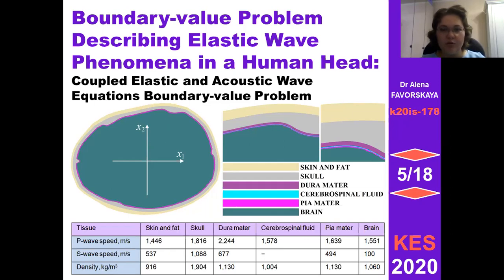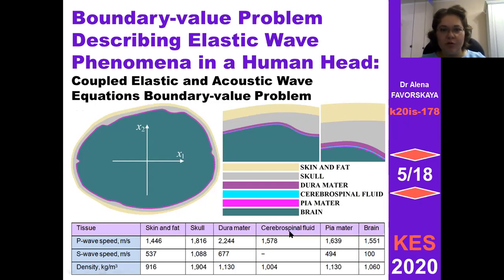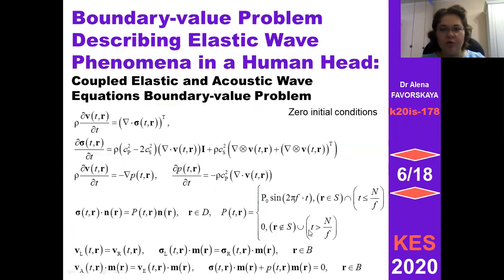These elastic and acoustic parameters are here, and at this slide we can see our boundary value problem. This is acoustic wave equation, also we solve elastic wave equation to describe cerebral spinal fluid in human head. Between acoustic and elastic wave equations we use this contact condition, and also we use this boundary condition. Here is our ultrasound source, and here there is a condition between two elastic layers with different elastic characteristics as shown in this table. Also, zero initial conditions have been used in this boundary value problem.